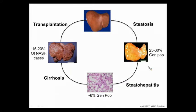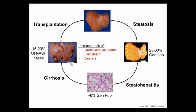Of the 25 to 30% with steatosis — that's the whole umbrella. About a fifth of them, roughly three to six percent of the general population, have the more aggressive form, steatohepatitis. About a fifth of those progress to cirrhosis. All these patients are at increased risk of cardiovascular death — about 40% will die of strokes or heart attacks — and there's also increased liver mortality and rising hepatocellular carcinoma incidence in this population.